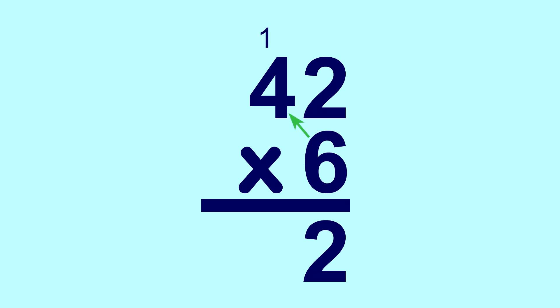6 times 4 is 24, plus the 1 we carried equals 25. We put that here in the answer below. My answer is 252. That's the old school tried and true way, but some learners do have trouble with it.